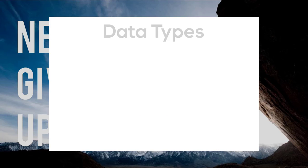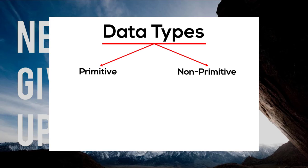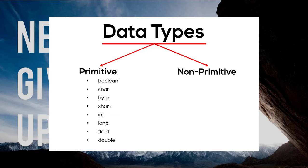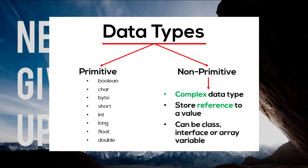Alright, that's it for variables and let's move on to data types. We can categorize data types into two categories: primitive data type and non-primitive data type. Primitive data types, also known as predefined data types, are the most basic data types available in Java. There are eight different primitive data types which include boolean, char, byte, short, int, long, float, and double. Non-primitive data types, also known as reference data types, are more complex because they don't store the actual value in the variable but a reference to that value, and can be a class, interface, or array variable.